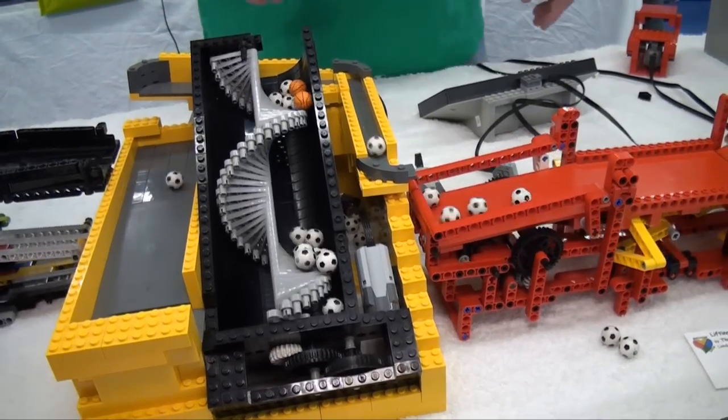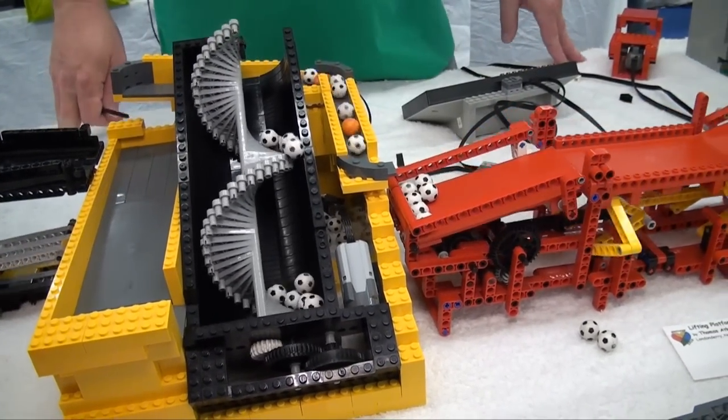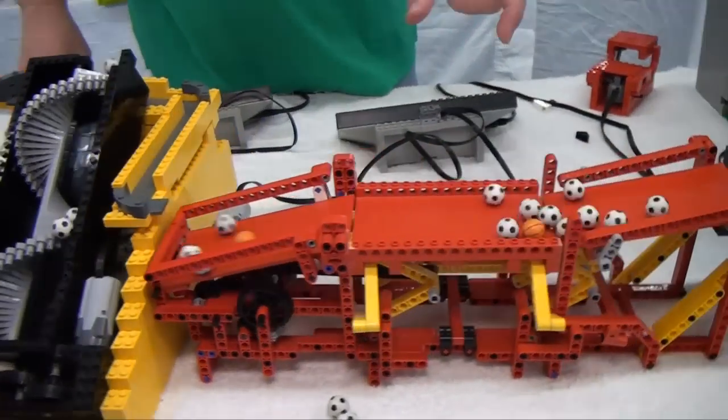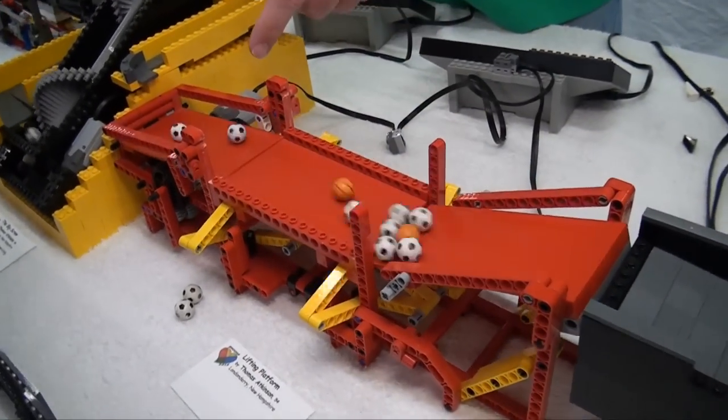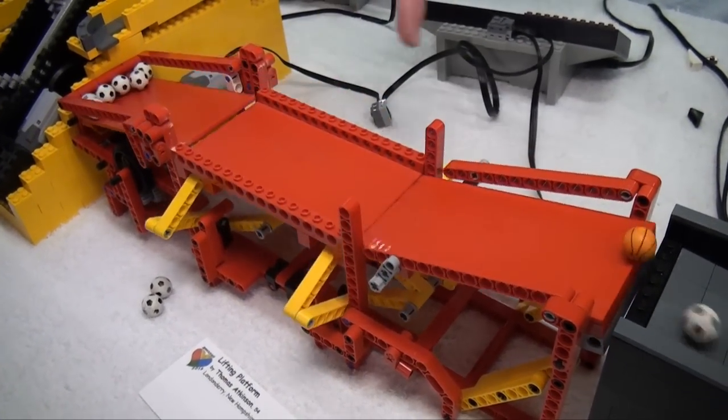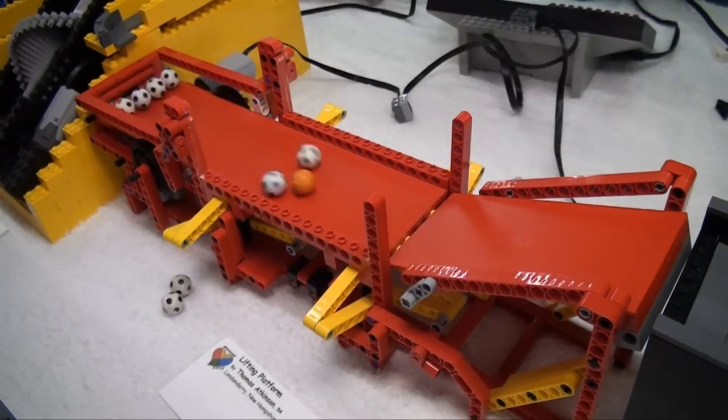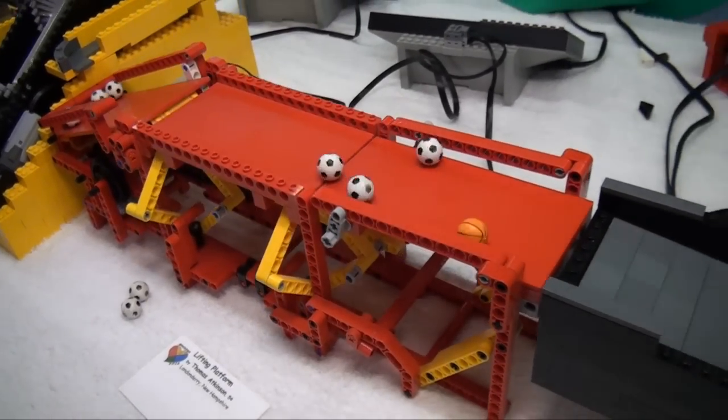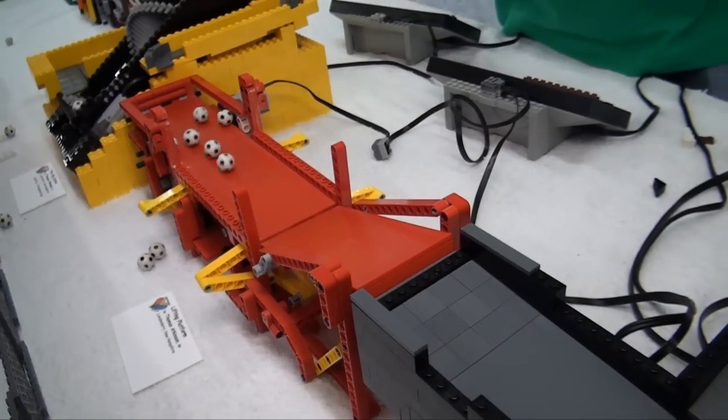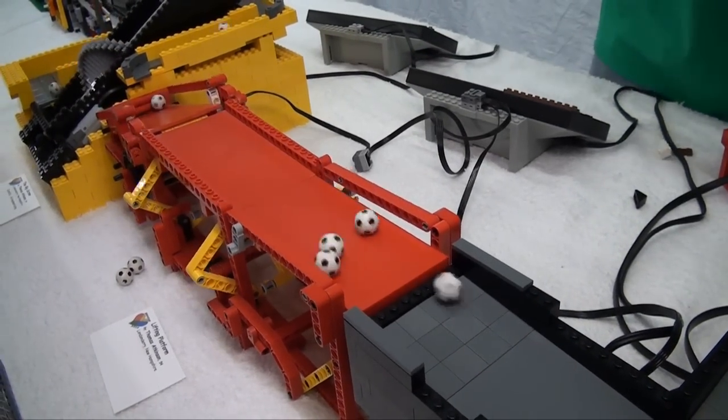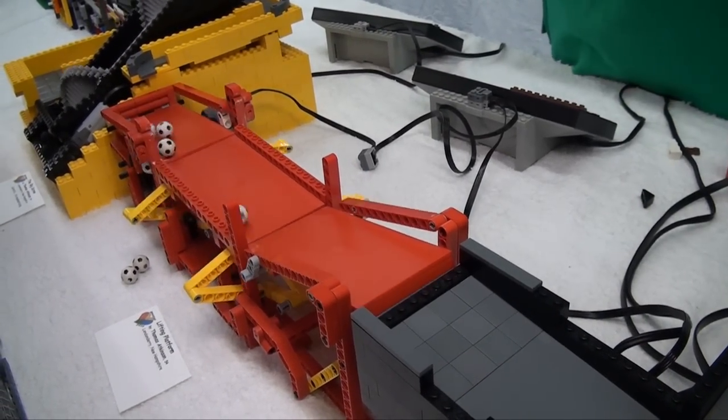From there, we go to a module that's basically a platform in the middle that goes up and down. And the input and output ramps just kind of float along with it. And when the platform's down, the input ramp can roll the balls in. And when the platform's down, the output ramp can roll them out.